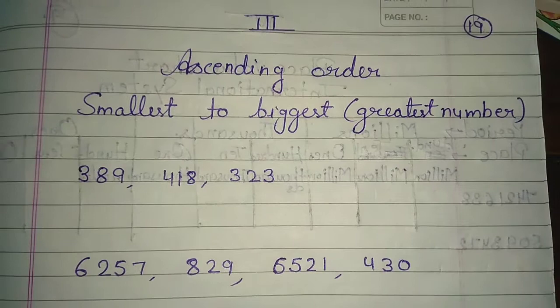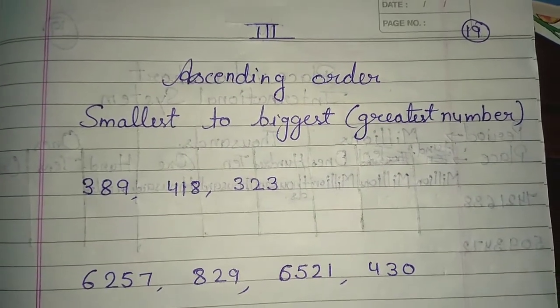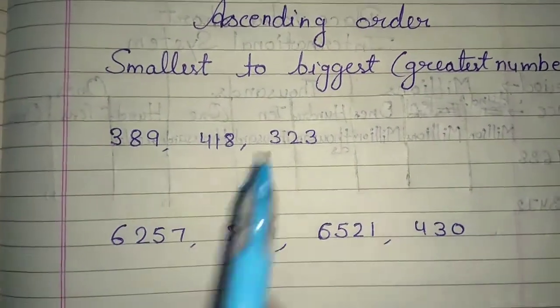Means that number is smaller than bigger. What do you mean by Ascending Order? See the first example.